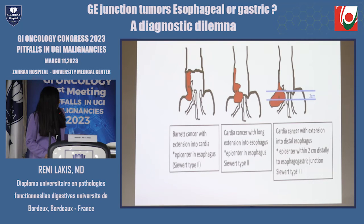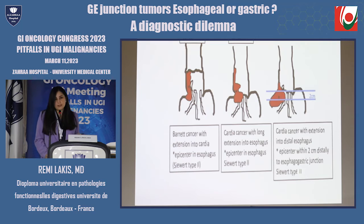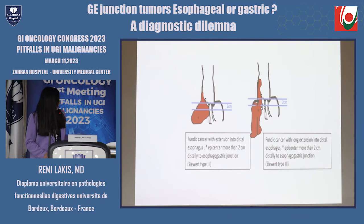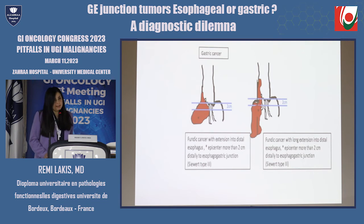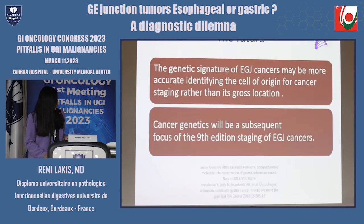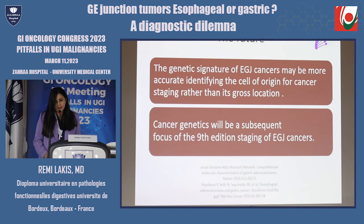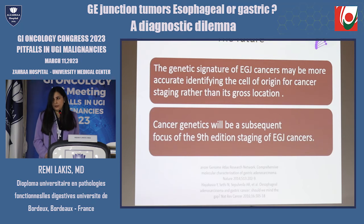For example, a Siewert type 1 is an esophageal cancer. A Siewert type 2 is also esophageal cancer. A cardiac tumor with little extension into the esophagus but whose epicenter is within 2 centimeters of the GA junction will also be considered esophageal cancer. On the other hand, a larger tumor with its epicenter pushed into the stomach will be considered gastric cancer. We hope in the future that the genetic signature of EG cancers will more accurately identify the cell of origin for cancer staging, and we expect cancer genetics to be a subsequent focus in the 9th edition staging of GA junction cancers.